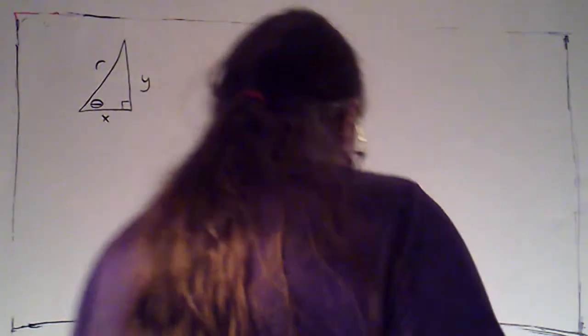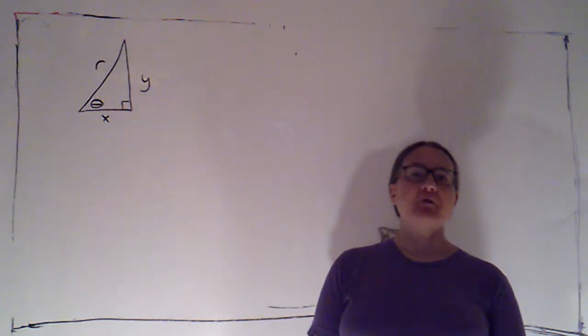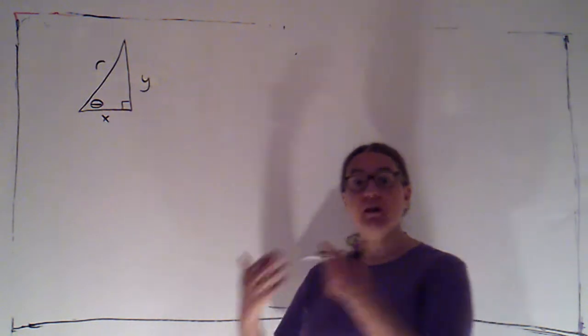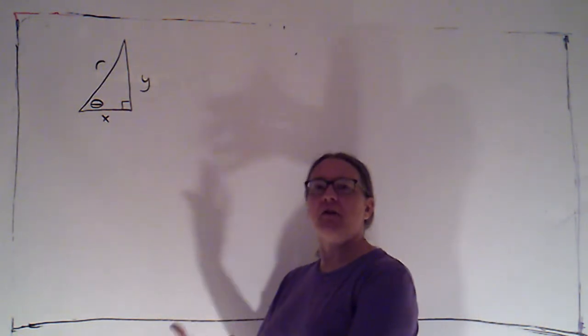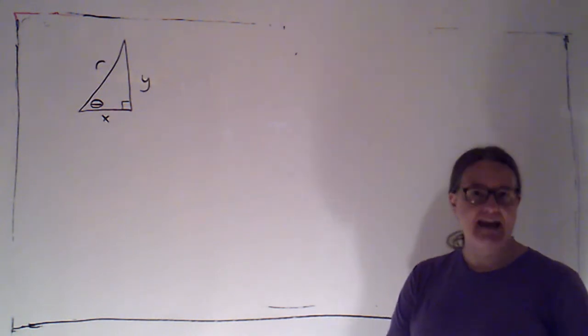In the last couple videos, we were converting back and forth between rectangular and polar coordinates, but we were doing that for individual points. Now I want to switch our attention to doing that for equations, with the idea that we're looking for an equation in the other coordinate system that would give us the same graph.